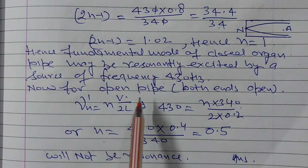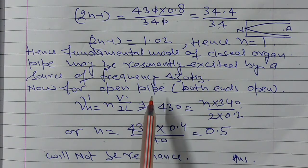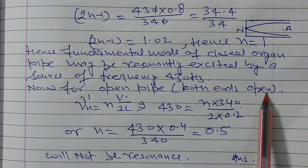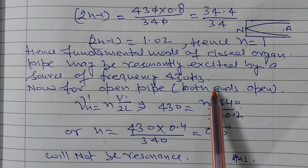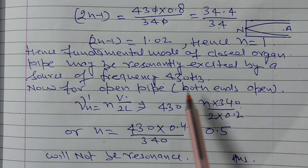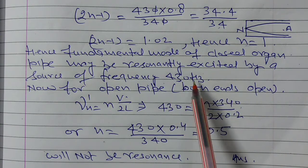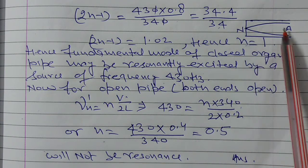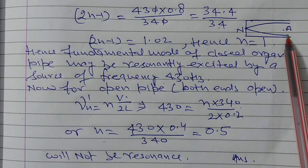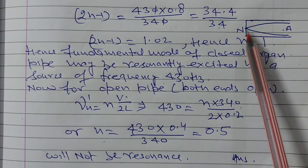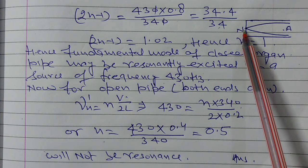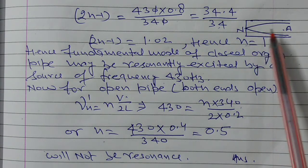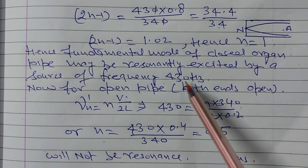Now the question asks about open pipe. Our closed organ pipe had frequency 430 Hz. If we open both ends—previously one end was closed and one was open, making it a closed organ pipe—now both ends are open, making it an open organ pipe. We need to determine which harmonic resonates with the 430 Hz source.